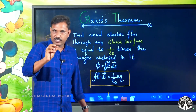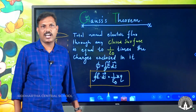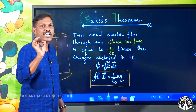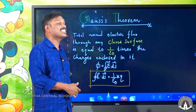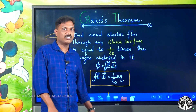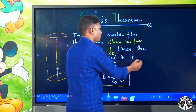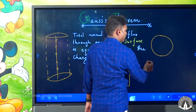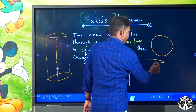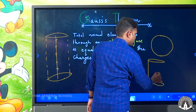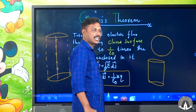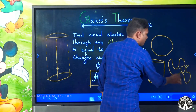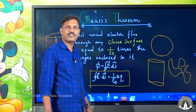What is the peculiarity of the Gaussian surface? It is closed. Closed means it is a symmetrical one. A sphere is a symmetrical one. A cylinder is a symmetrical one. A circle is a spherical one. This irregular shape is not a symmetrical one. The surface area here is a small area.